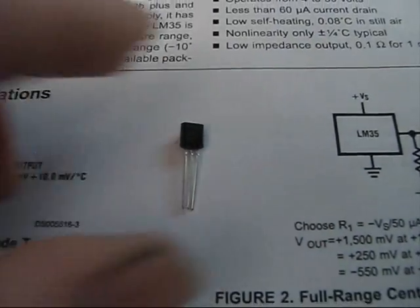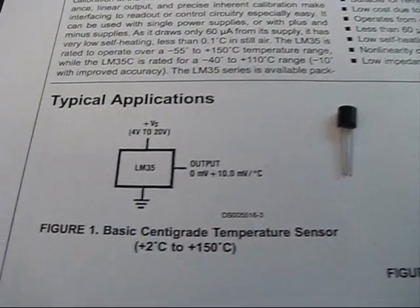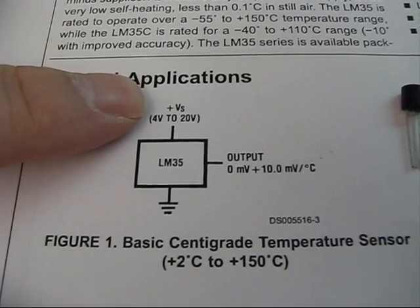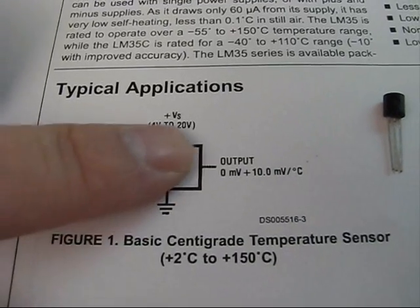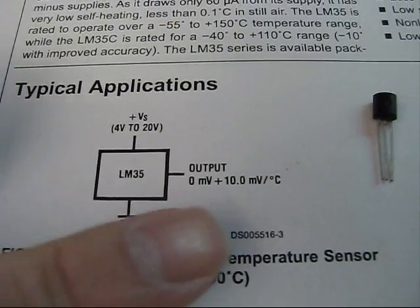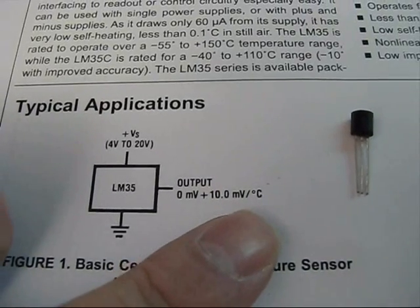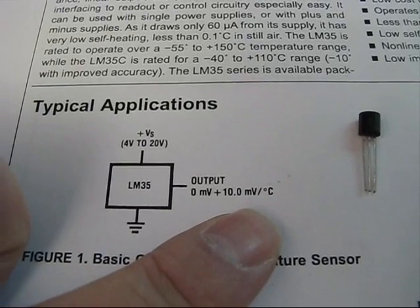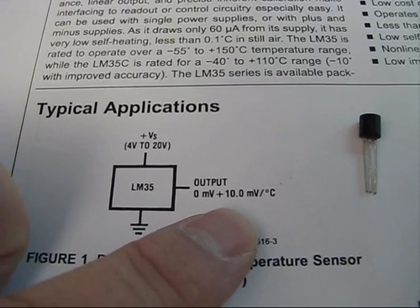This is the actual device right here, nice and small, and this is the wiring diagram we're going to be using. So this device can take anywhere from 4 to 20 volts, ground on one pin, and on the third pin you have your output. Now, here's what's nice about this. This output is 0 millivolts plus 10 millivolts per degree Celsius. So what's nice about this is, if the reading was, let's say, 30 millivolts, you would know right away that that's 3 degrees Celsius.